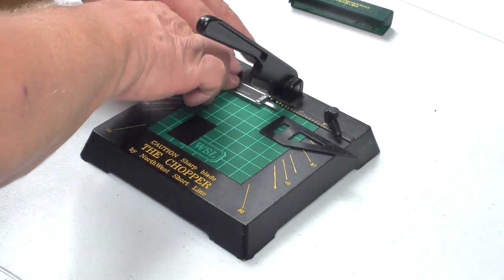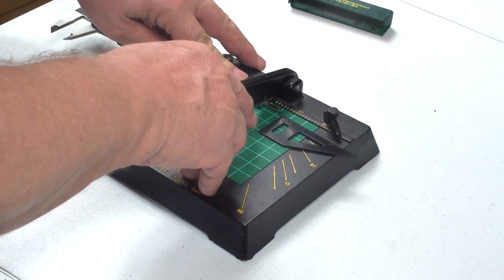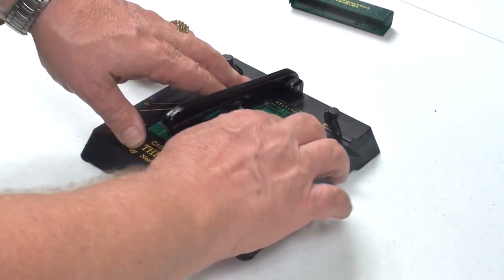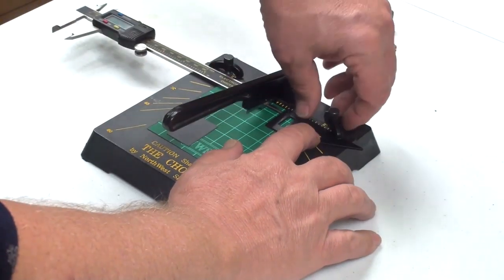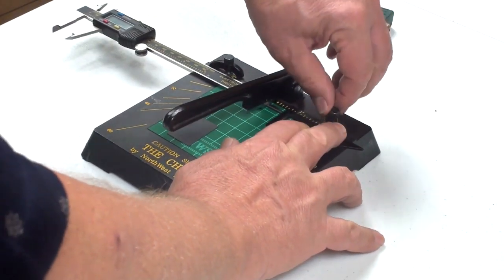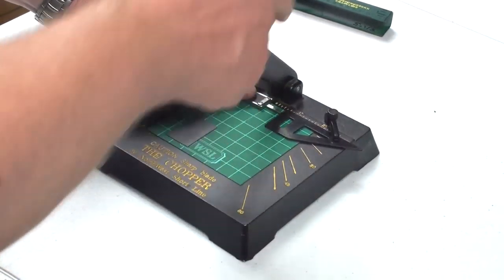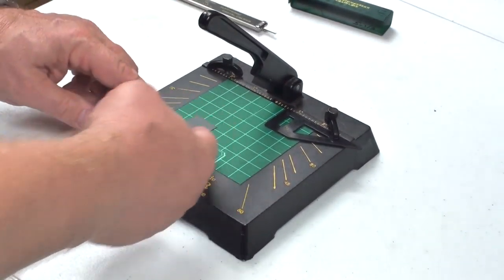I'm going to bring the knife down, the razor blade down, just lightly on the calipers right against the edge, and then I'm going to bring the fence in place and lock it down. Now the dimension between the blade and the fence is what I want.